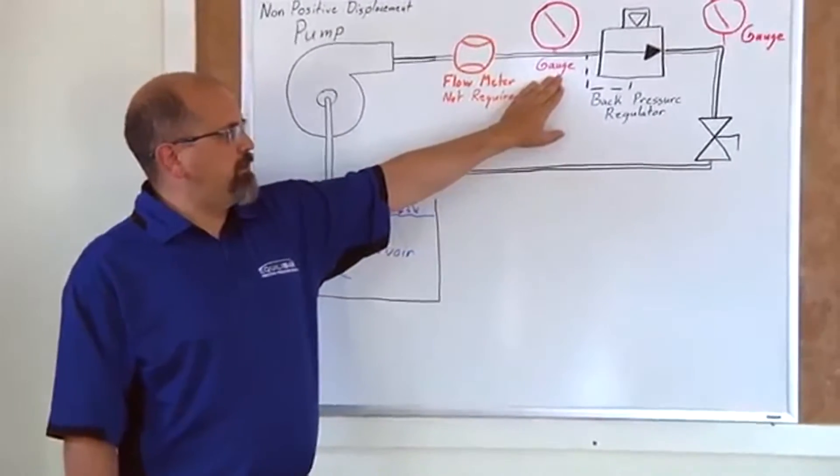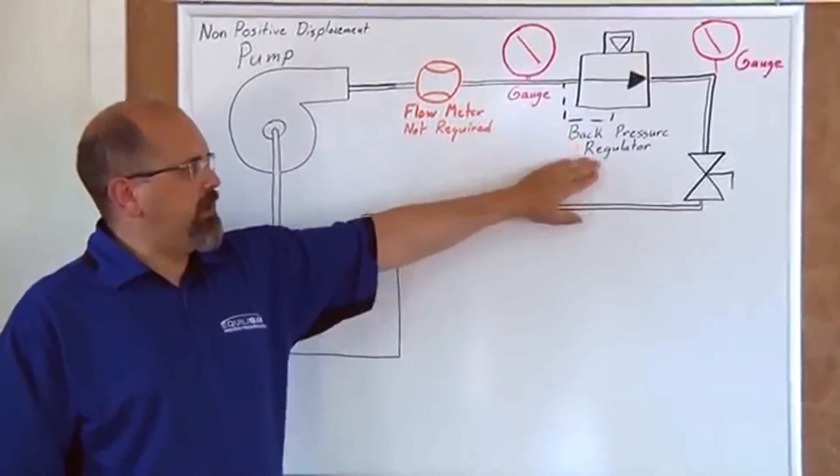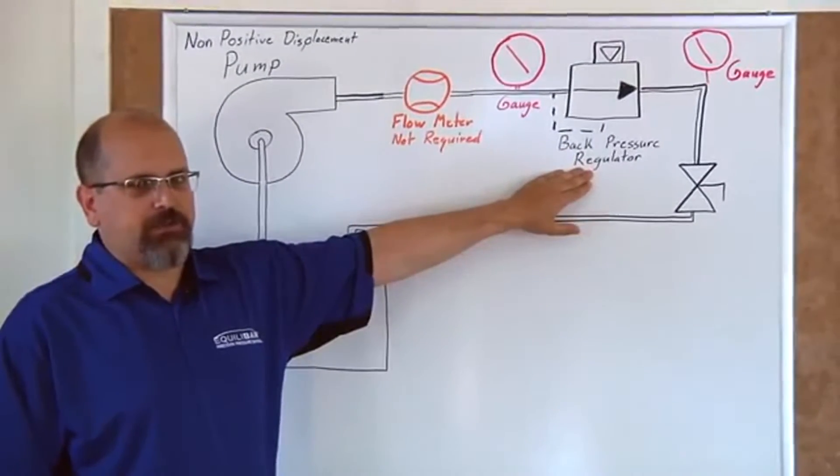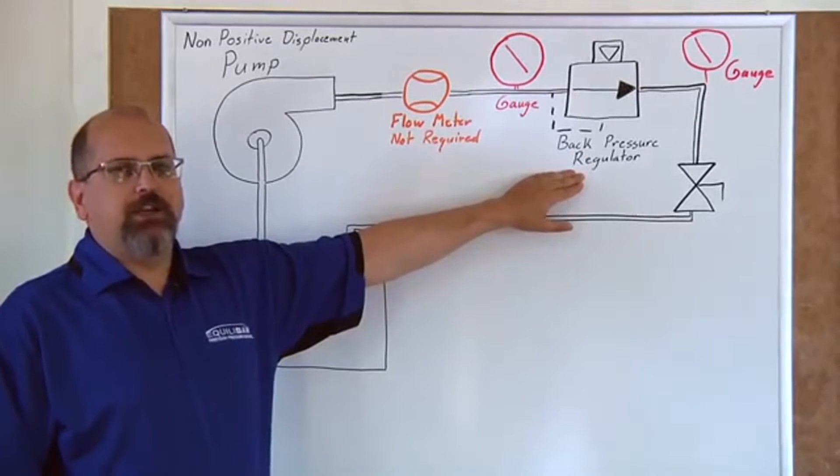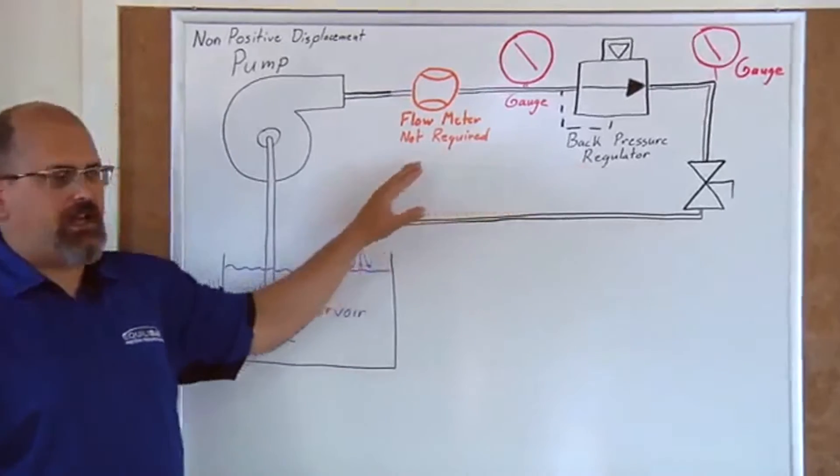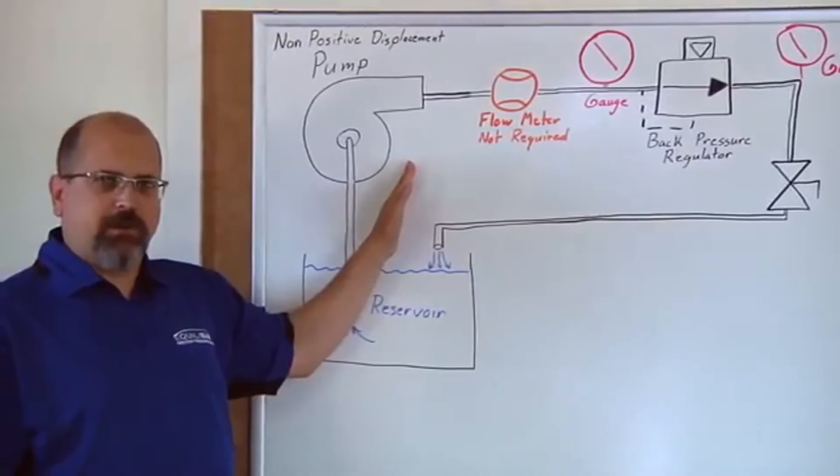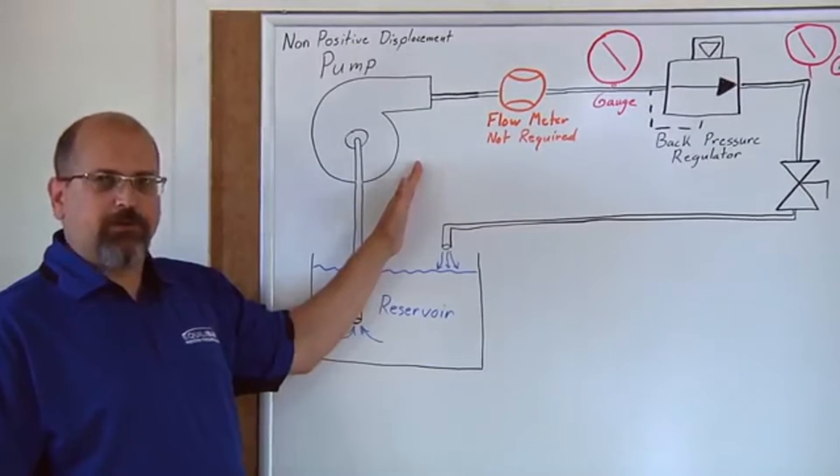The output pressure of the pump is going to be controlled by this Equilibar Precision Back Pressure Regulator. I'm going to use the back pressure regulator to put the pump at the desired point on the PV, the pressure volume curve for the pump.